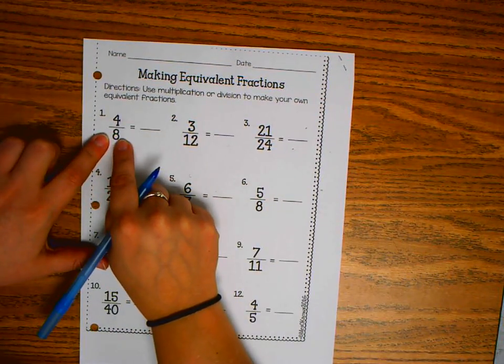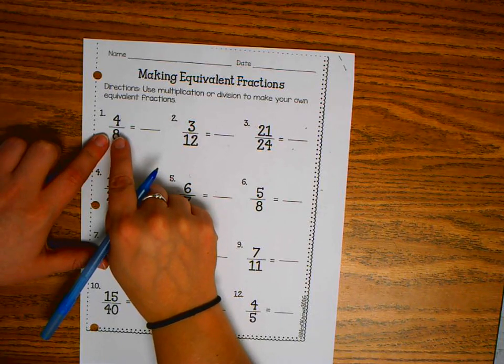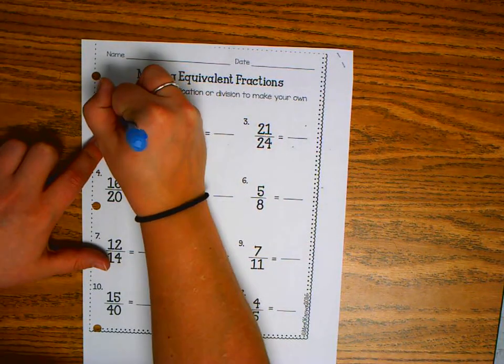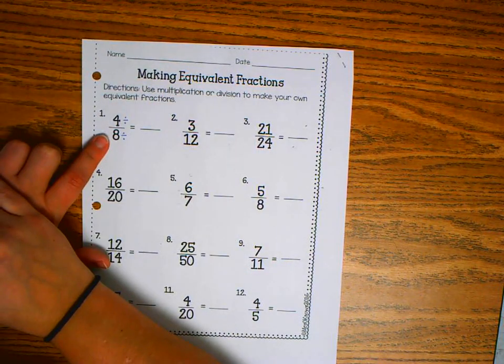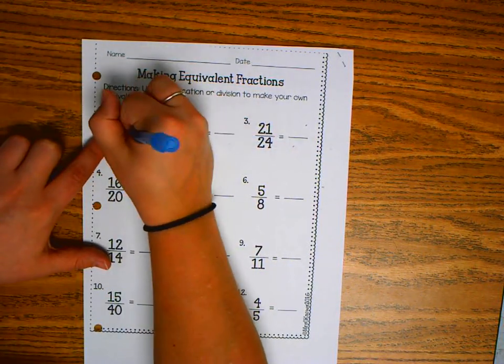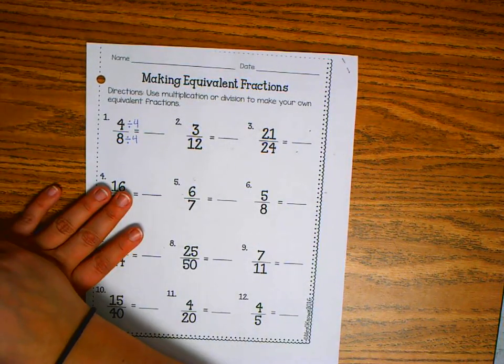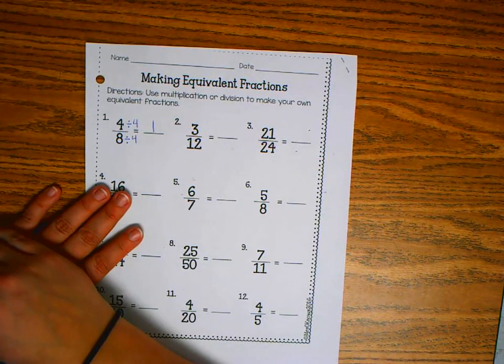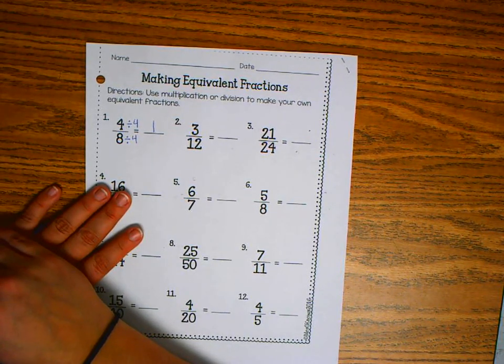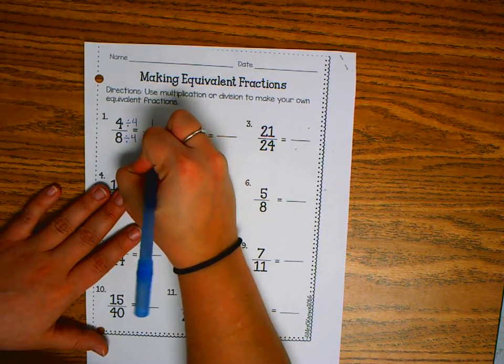So in this case, I can divide 4 into 4 and into 8. 4 divided by 4 is 1, and 8 divided by 4 is 2.